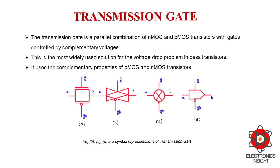The construction of the transmission gate is very simple. It is just a parallel combination of NMOS and PMOS transistors with gates controlled by complementary voltages, and here you can see the different symbolic representations of the transmission gate. It uses complementary properties of NMOS and PMOS transistors. Since NMOS is capable of passing strong zero it is used to pull down the output, and similarly since PMOS is capable of passing strong one it is used to pull up the output.